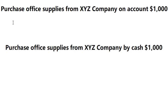Hello everybody, so today I will talk about accounting — this is about journal entries. Purchase office supplies from SYZ Company on account, 1000 US dollars. Purchase office supplies from SYZ Company by cash, 1000 US dollars.